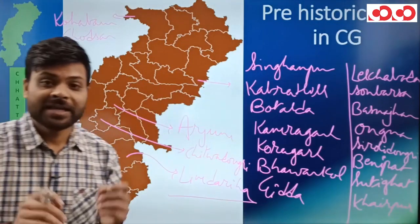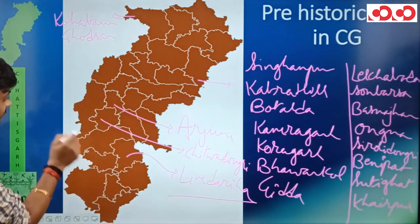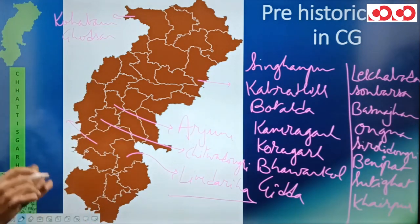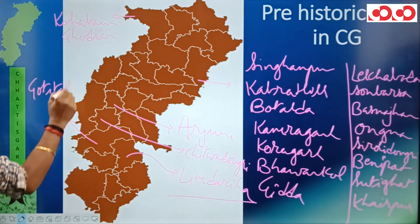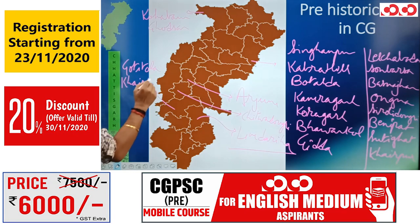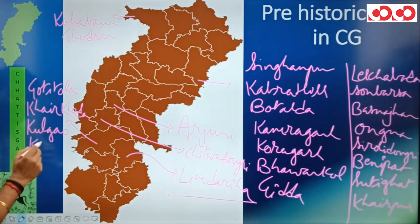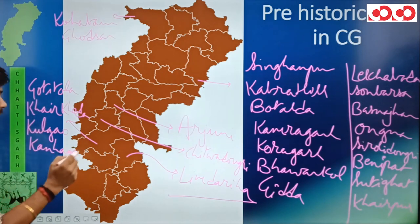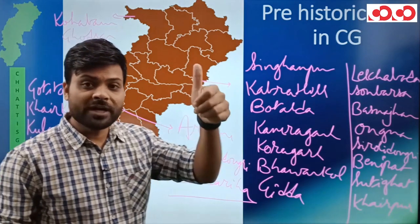इसके बाद Bastar division में एक district है — Kanker district। Kanker district में: Goti Tola, Khair Kheda, Uchkuda, Kulgaon, और Kanagaon। तो Goti Tola, Khair Kheda, Uchkuda, Kulgaon और Kanagaon — ये Kanker district के prehistoric sites हैं।